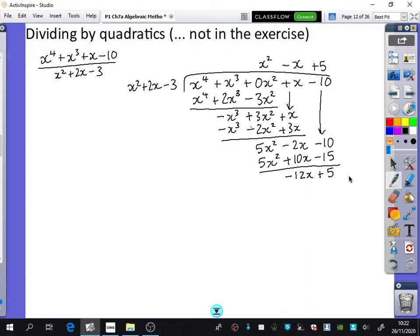Do we keep going? No. So this time, the remainder is a linear. But that's because it's a quadratic. When it was a linear here, the remainder could have been a number. Because this is a quadratic, the remainder is allowed to be a linear. So if I was going to actually write the answer to this question, it would be equal to x squared minus x plus 5, and then the remainder is minus 12x plus 5 over x squared plus 2x minus 3.